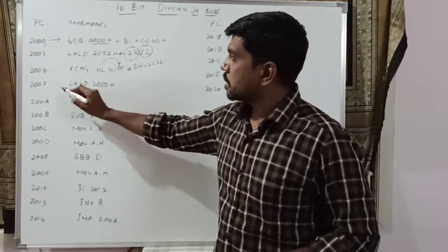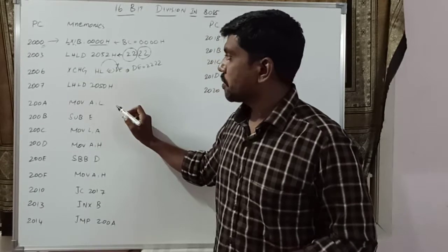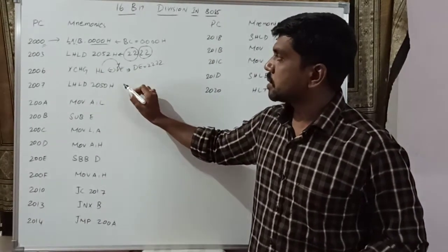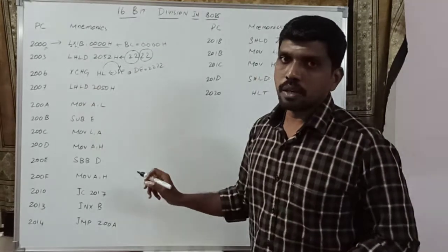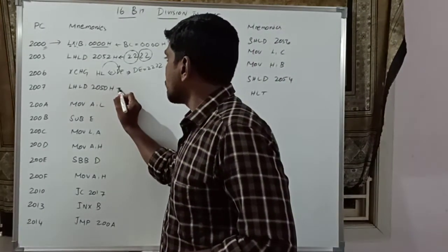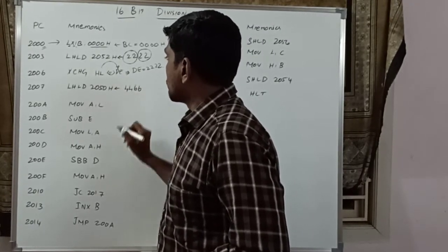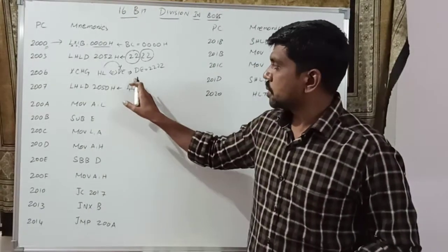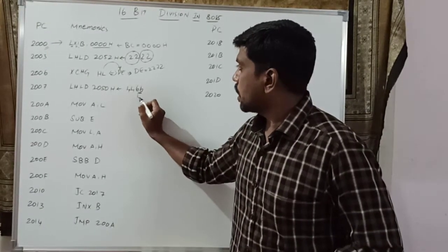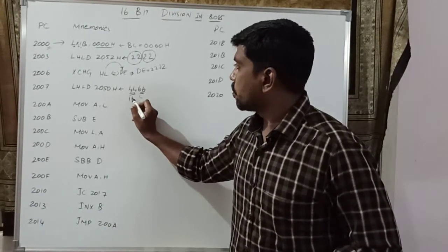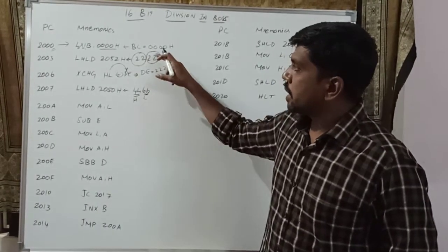The next memory location is 2007H. In this memory location, you point LHLD 2050H. This memory location represents the second value. The second value is fetched and transferred to the HL register. Let us consider the second value: 4466H. So it is also one 16-bit value. This value is transferred to HL register — 66H moves to L register, 44H moves to H register.